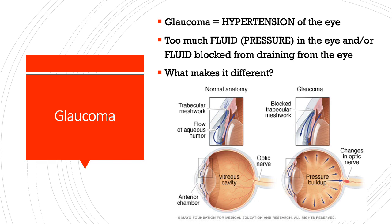Glaucoma — think of it like hypertension of the eye. There's too much fluid or pressure in the eye, or the fluid is getting blocked from draining. In the front of the eye there's a structure called the trabecular meshwork where fluid normally drains easily. With glaucoma, either acutely or over time, this drainage gets blocked. In chronic glaucoma, as fluid and pressure slowly build up, the symptom patients will complain about is tunnel vision or loss of peripheral vision.